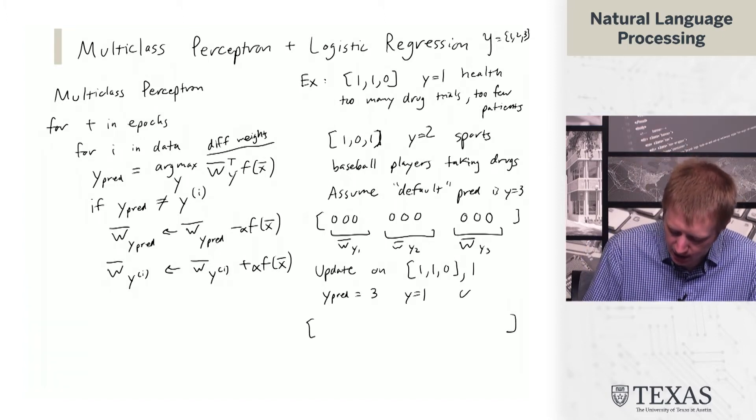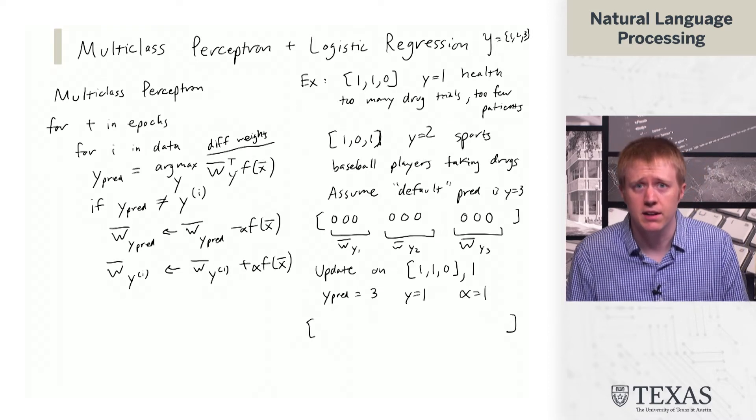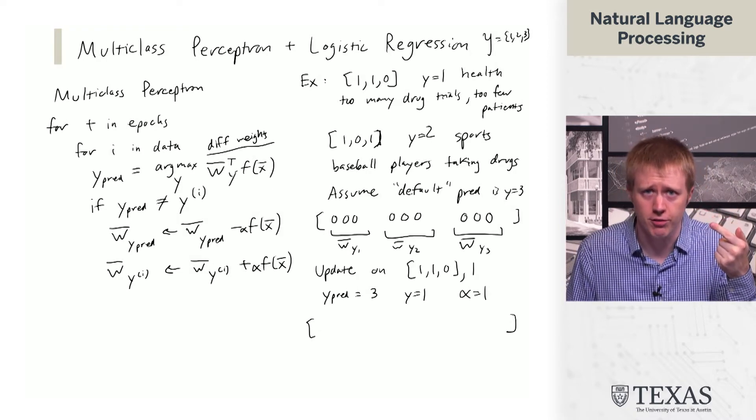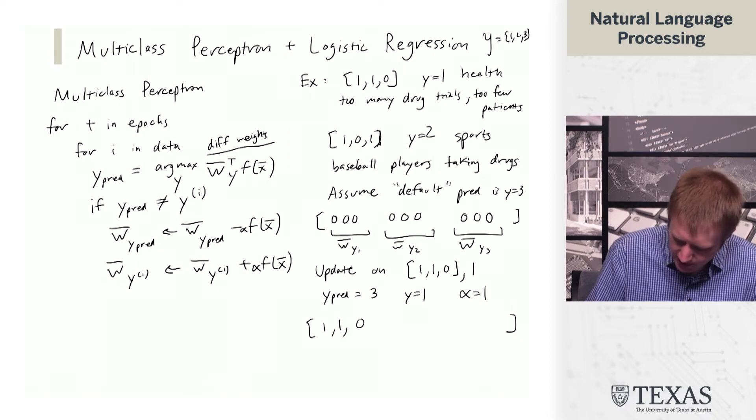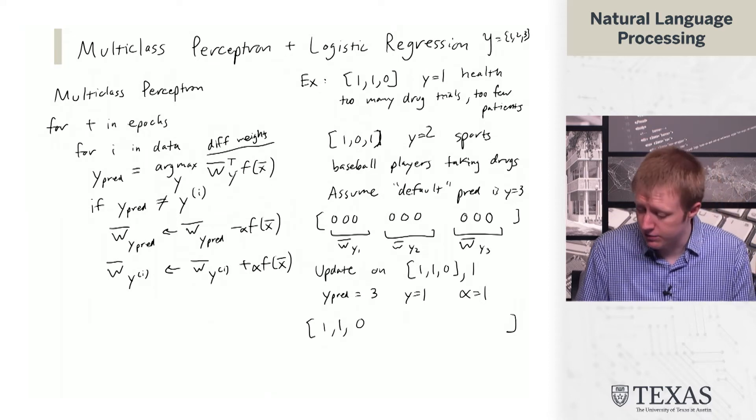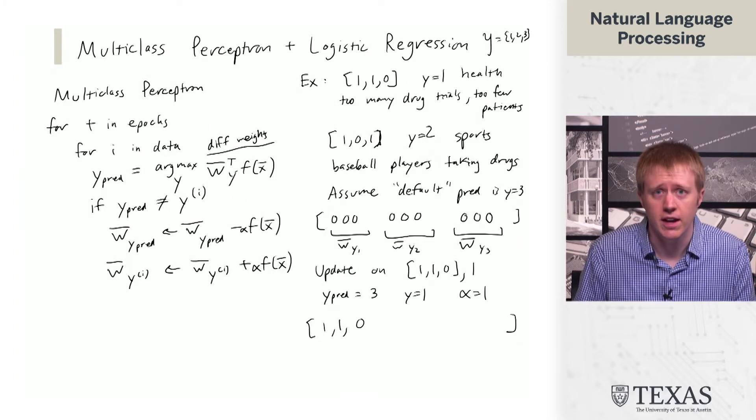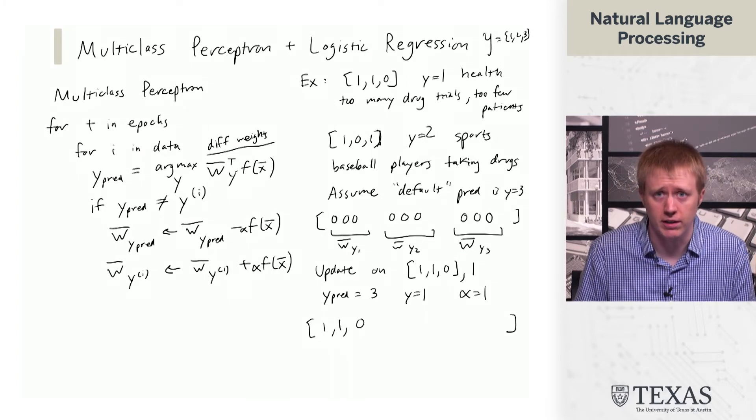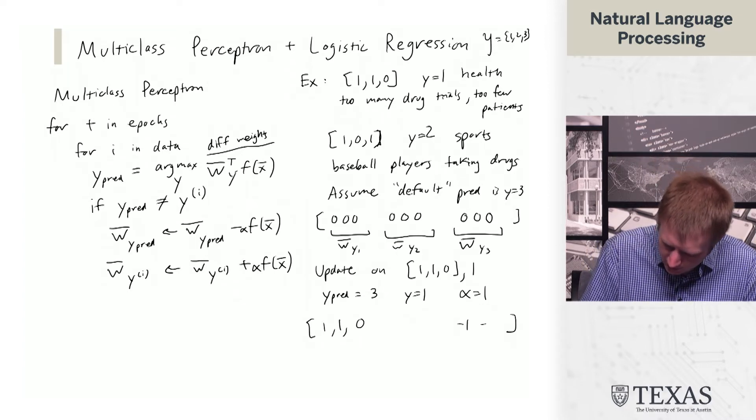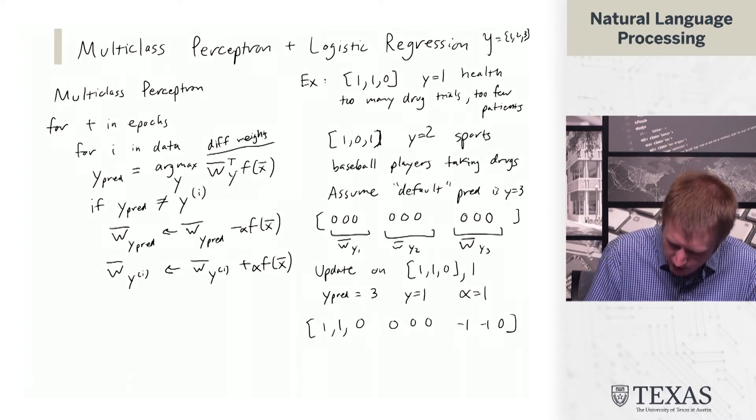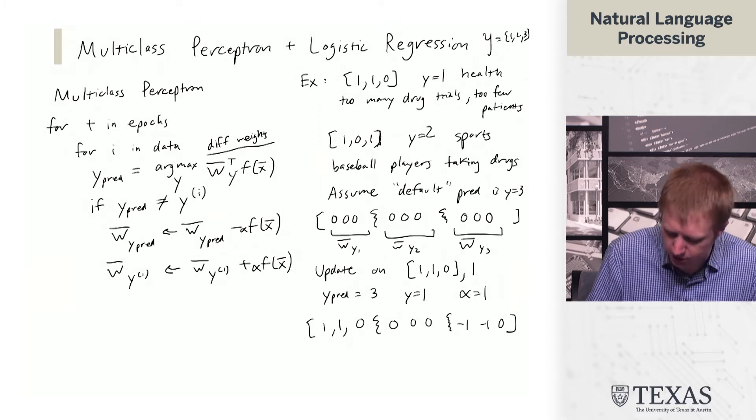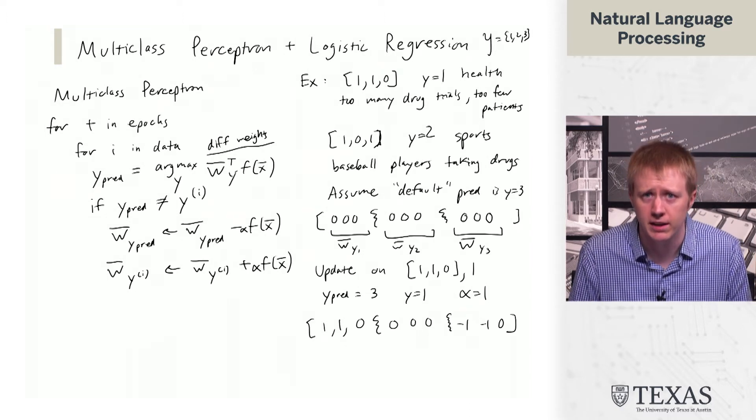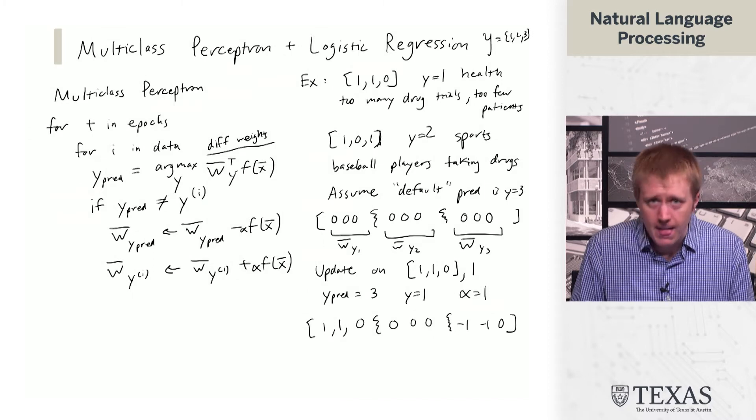What happens? Well, so we have ypred equals 3 and y equals 1. These are not equal. So we need to make an update. And that update, we're going to take alpha to be 1. That update consists of adding the features for the correct value of y. So that gives us this. And then subtracting the features for the other values, for the incorrect value of y. So that gives us this. And then we have zeros in the middle here. I'm just going to put a squiggle in the middle here to indicate that these aren't really in the same vector, but I'm just kind of writing them that way graphically.